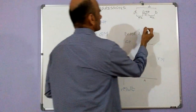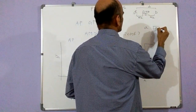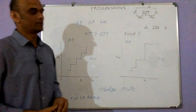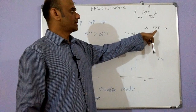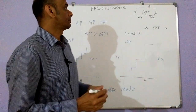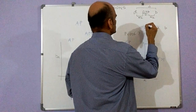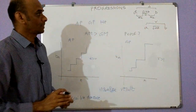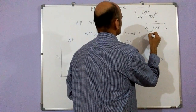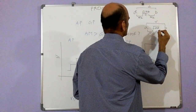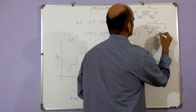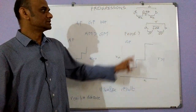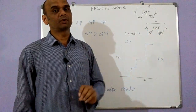Similarly, a, the square root of ab, and b will form a geometric progression. The square root of ab is the geometric mean between the numbers a and b. The ratio between a and the geometric mean is the square root of r, and the ratio between the geometric mean and b is also the square root of r. So a, square root of ab, and b form a geometric progression.